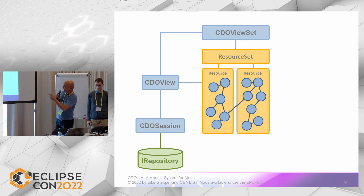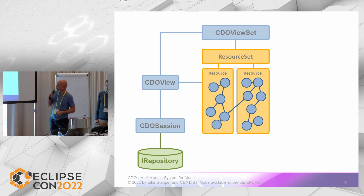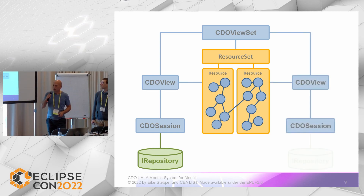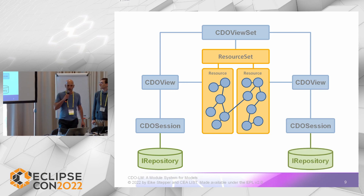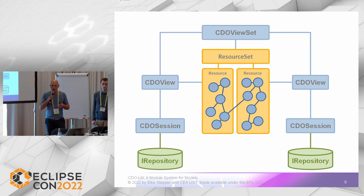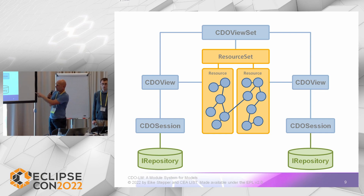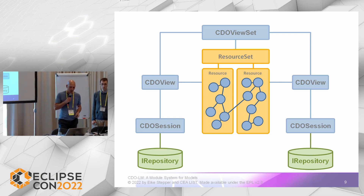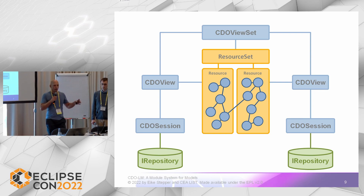Just to explain why it's called a CDO view set — it can manage multiple CDO views which come from their own sessions, with the restriction that each of these views must come from a different repository. That means you can assemble object graphs across multiple object repositories.